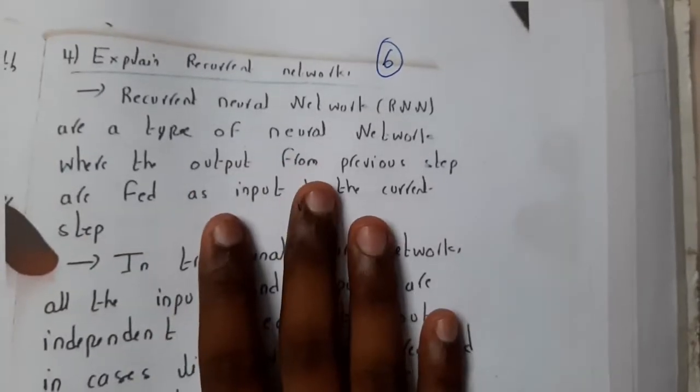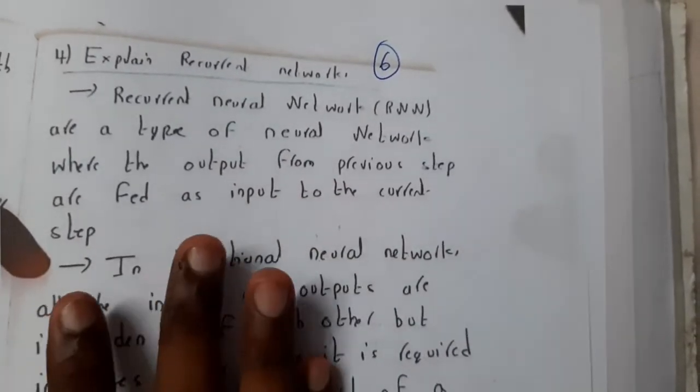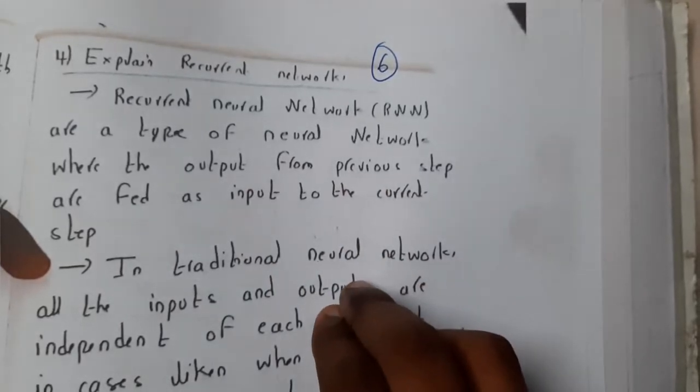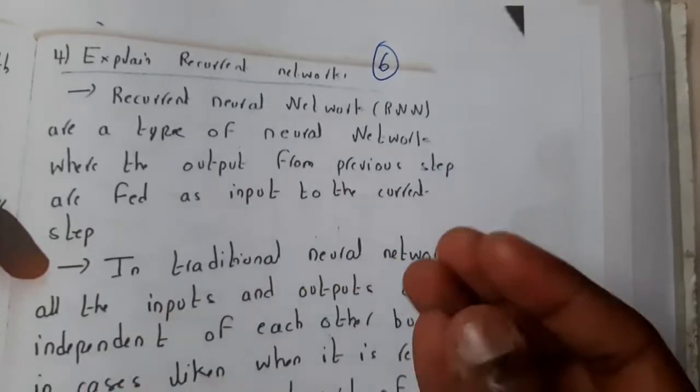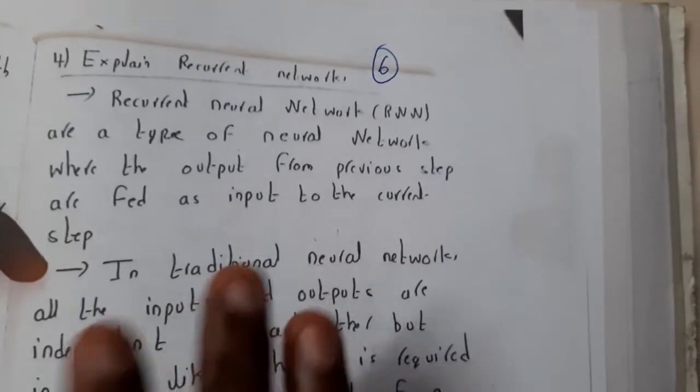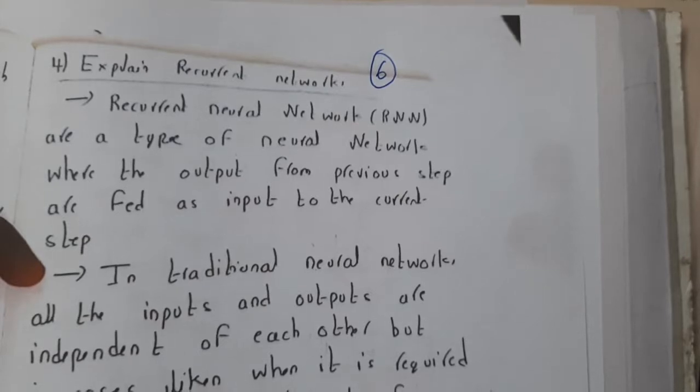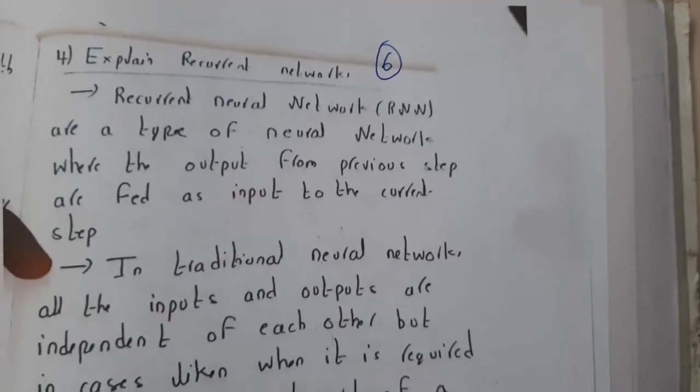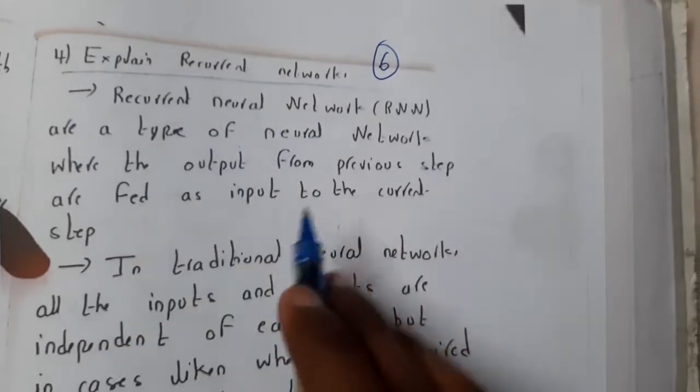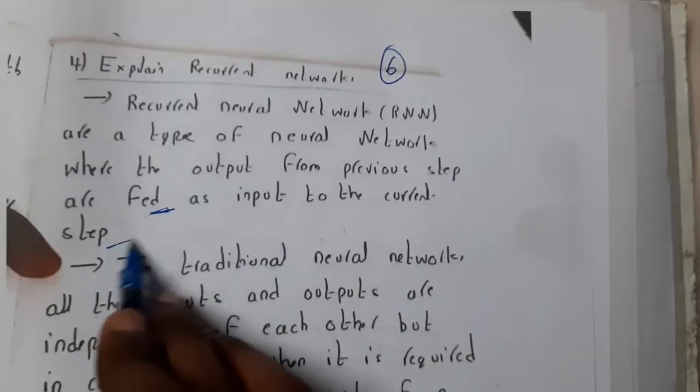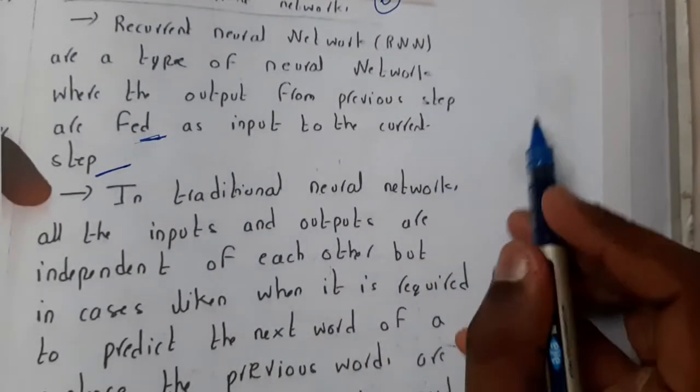So recurrent networks: basically in neural networks the present output is depending only on the present input. We cannot use the previous output or any kind of things like that, so that is the reason why neural networks failed in some cases. Recurrent neural networks are a type of neural networks where the output of a previous step is fed as an input to the current step.